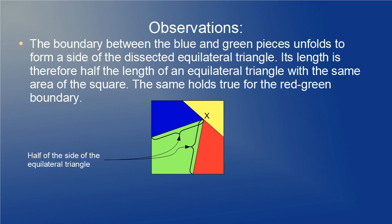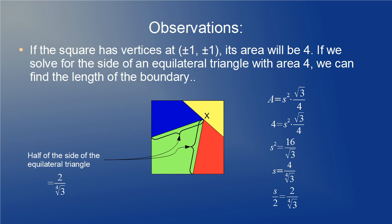Another observation is that the boundary between the blue and the green pieces unfolds to form a side of the dissected equilateral triangle. Its length is therefore half the length of an equilateral triangle with the same area of the square. The same holds true for the red-green boundary. Let's calculate the length of it. If the square has vertices at plus or minus 1, plus or minus 1, its area will be 4.